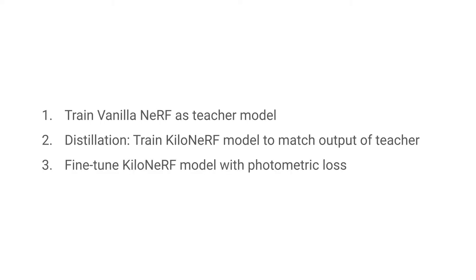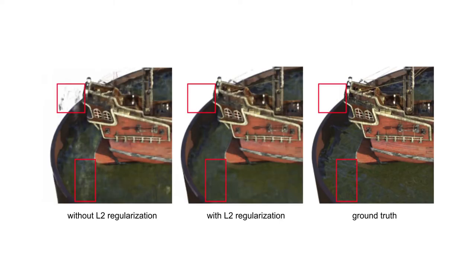Finally, we fine-tune the KiloNERV model with the original photometric loss. Additionally, we found that applying L2 regularization to the last two layers further reduces artifacts in free space without sacrificing visual quality.